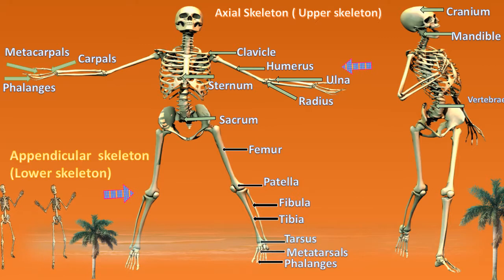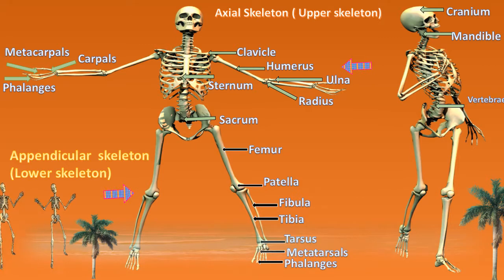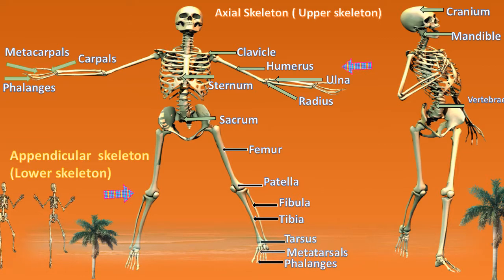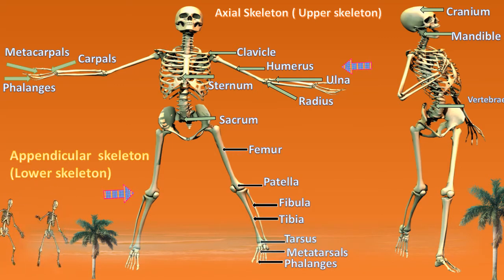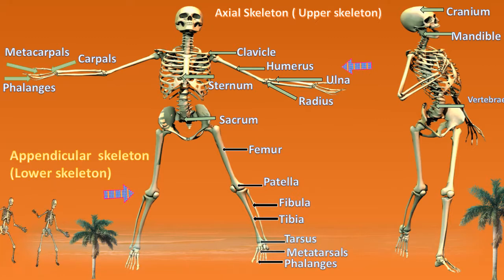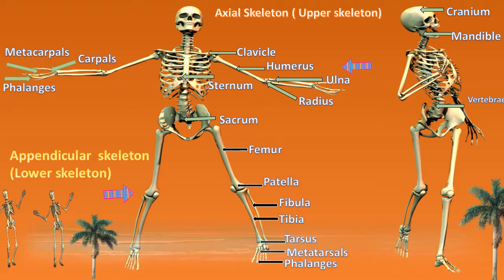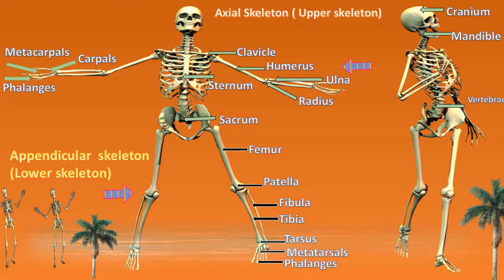Then we have the ulna bone. The ulna bone is aligned to your little finger. Then the radius bone is aligned to your big finger. Let's move down to the sternum. The sternum is otherwise known as the breast bone, and it is bound between your rib bones.